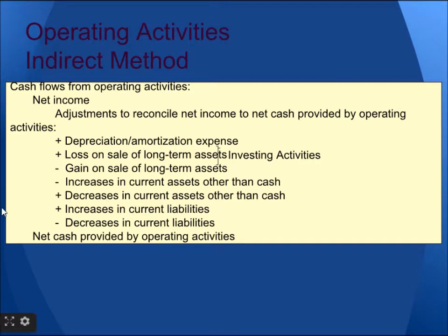Since the current liability is increasing, we have to increase — that is, add it to — net income. For a decrease in current liability, we have to deduct it, following the rule decrease-decrease. Then we will get the net cash provided by operating activities.